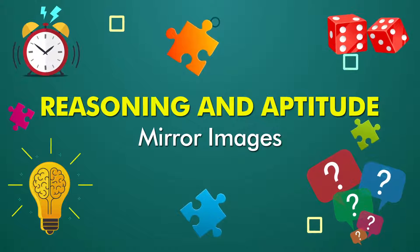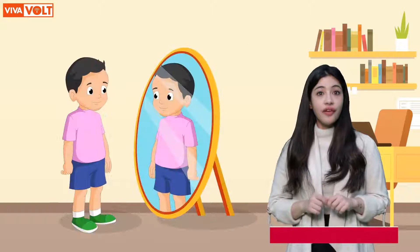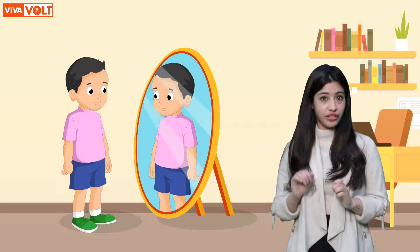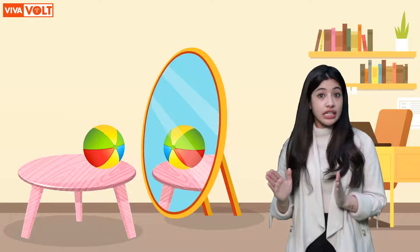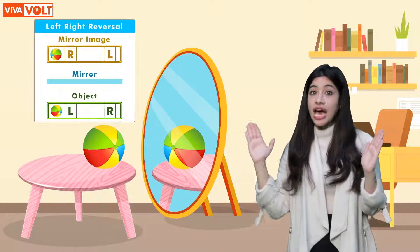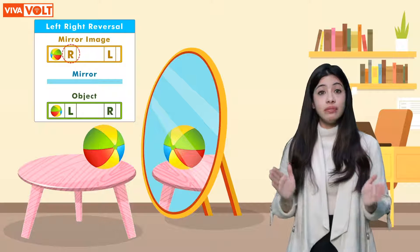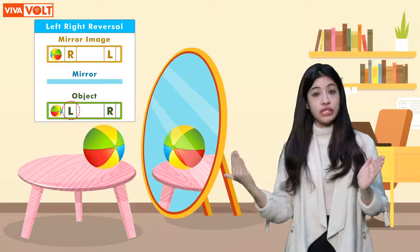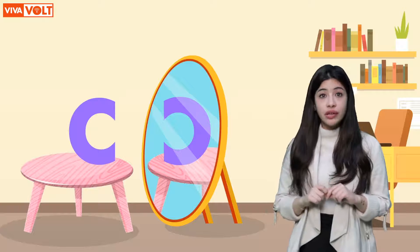Hello children! Today we will learn about an interesting topic called mirror images. When we look at a mirror, we see our image — this is our mirror image. If you place any object in front of a mirror, you see its image with its parts reversely arranged. We can also say that a mirror image is the direct opposite of an original image.